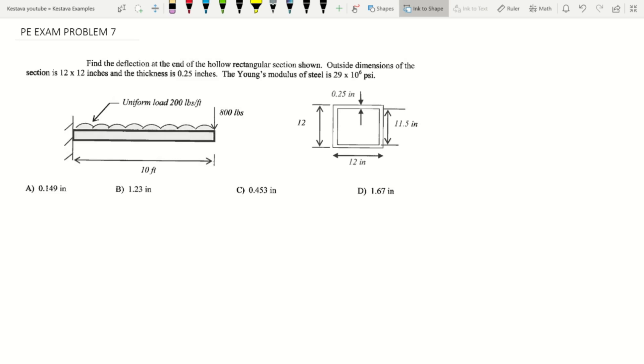Find the deflection at the end of the hollow rectangular section shown. Outside dimensions of the section is 12 by 12 inches and the thickness is 0.25 inches. The Young's modulus of steel is 29 times 10 to the 6 psi.